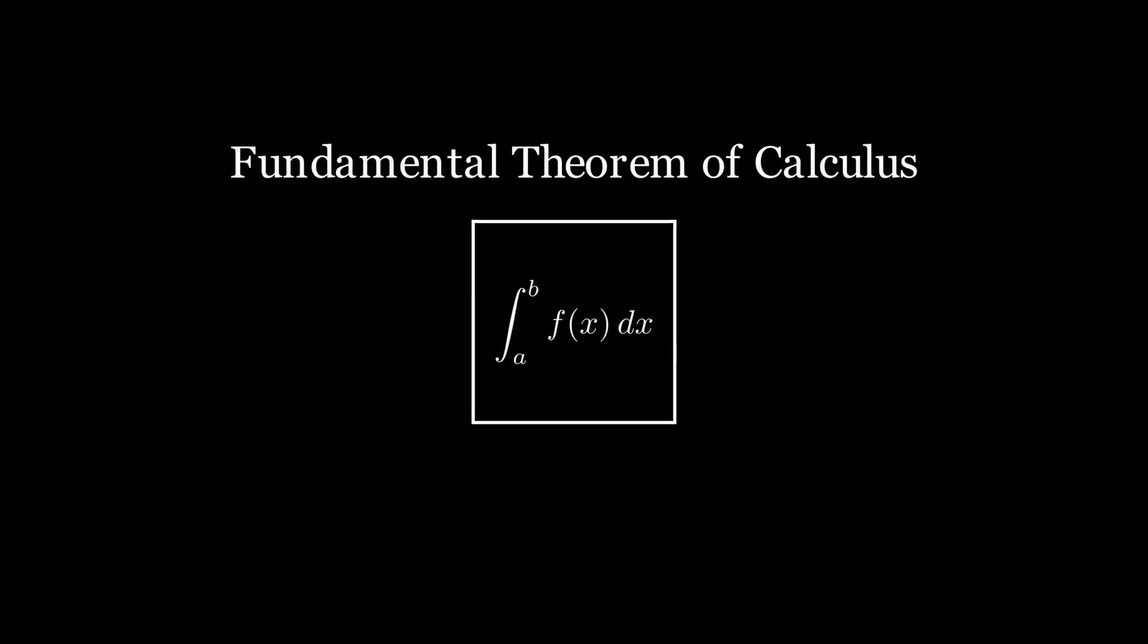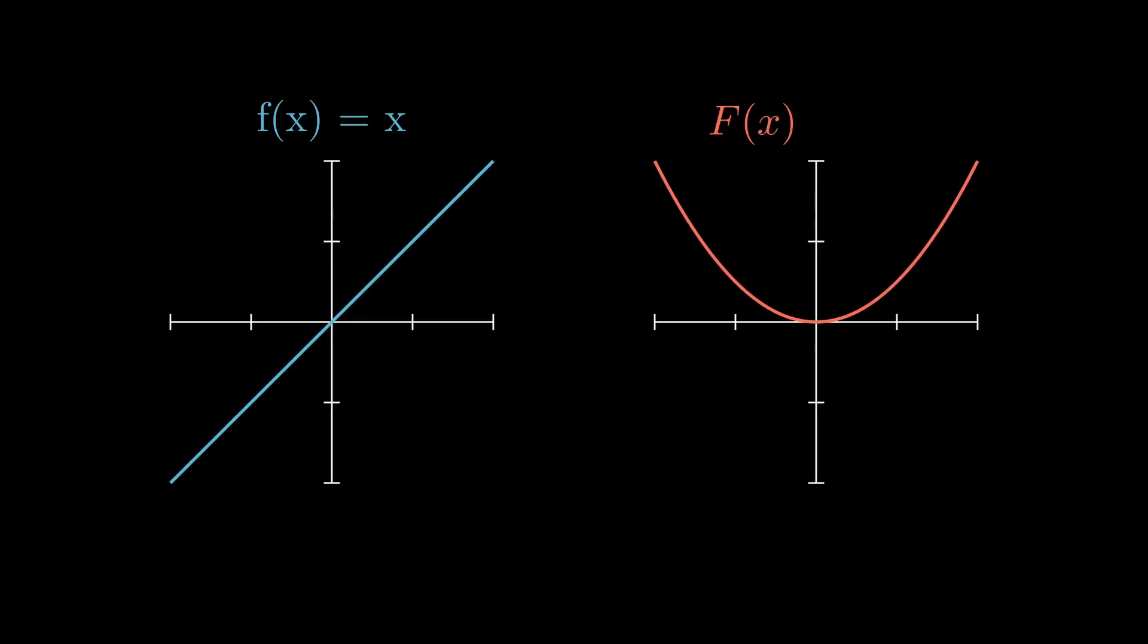Let's take a look at what this theorem really means. In calculus one courses, the fundamental theorem of calculus is often taught like this. When you have a function little f(x) and its antiderivative big F(x), the integral of little f(x) between two points a and b will be equal to big F(b) minus big F(a).